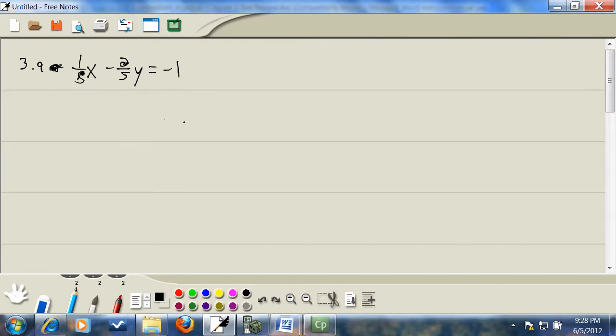First step, get rid of parentheses. We don't have any. Second step, get rid of fractions. We do that by multiplying everything by the LCM of all our denominators. We got eight and five. The LCM of eight and five is 40. So we're going to multiply everything by 40.